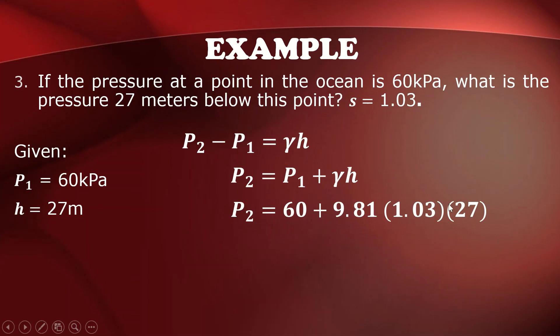that is 1.03, then H is 27. And so, the second pressure, 27 meters below the reference point, wherein the pressure is 60 kilopascal is 332.82 kilopascals.